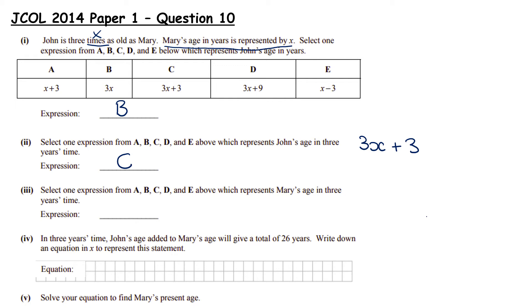Select one expression from A, B, C, D and E above which represents Mary's age in 3 years time. So Mary is currently x and then in 3 years time she's going to have an extra 3 years. We're going to add on 3 and that is A.